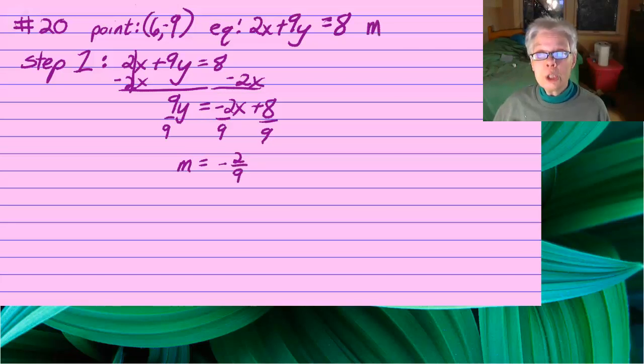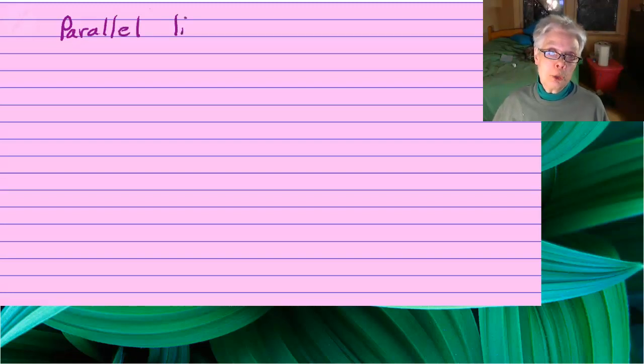The slope of that is negative 2 over 9. So the slope of the line that we're looking for is going to be negative 2 over 9 as well, because we're looking for a line that's parallel to the given line and that goes through the given point, 6, negative 9.